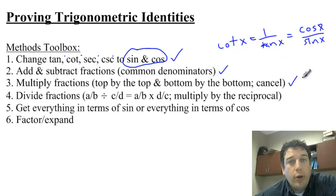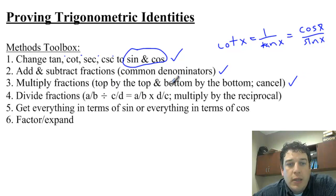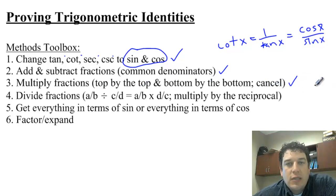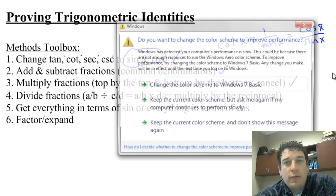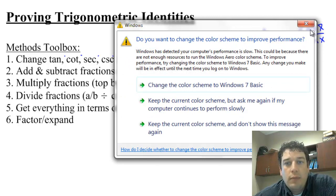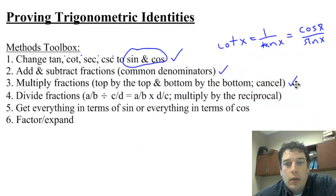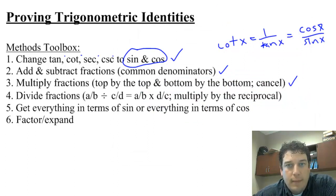We also need to understand how we multiply fractions. We don't cross-multiply — we multiply the tops by the tops and the bottoms by the bottoms. We can also cancel things out as long as it's in factored form and we're not dealing with addition or subtraction.